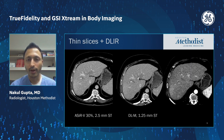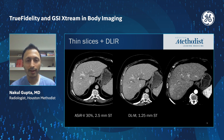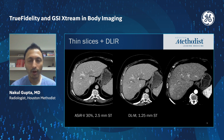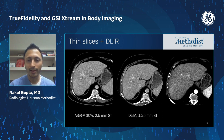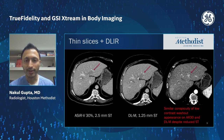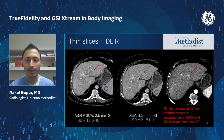Thin slice scans are another area of strength for deep learning recon or true fidelity. Here's an example: a portal venous phase scan of the liver in a patient with cirrhosis and a left hepatic HCC — a hypervascular nodule with somewhat subtle washout on the portal venous phase. The HRES image at 2.5 millimeter slice thickness and the deep learning medium strength at 1.25 millimeter slice thickness have very similar noise properties and very similar lesion contrast acuity, despite the reduced slice thickness with the DL recon.